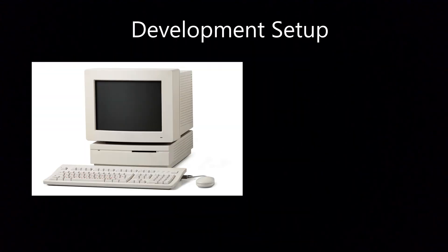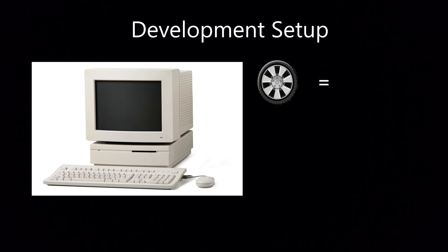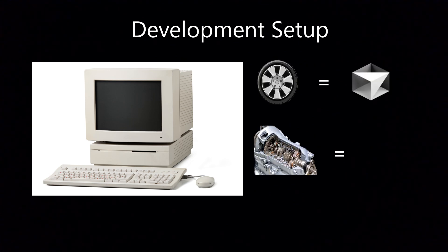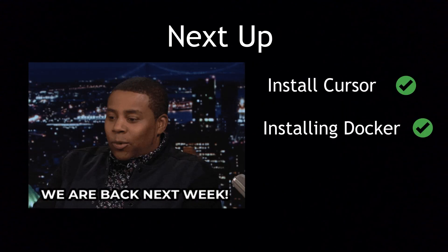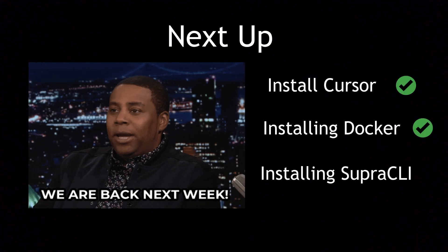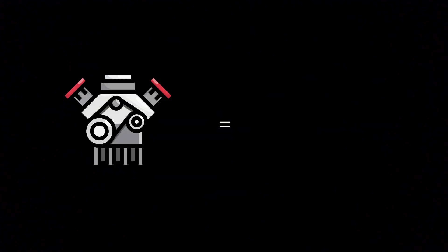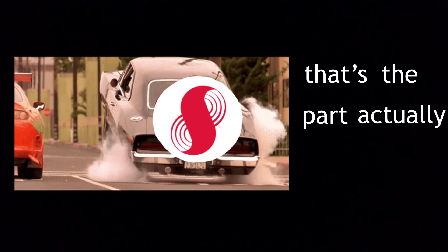That means your development setup now has both wheels, which is Cursor, and your transmission, which is Docker, and it's ready to go. Next up, you're going to install the engine, which is Super CLI — the part that actually powers your super development. Let's finish building the full setup.